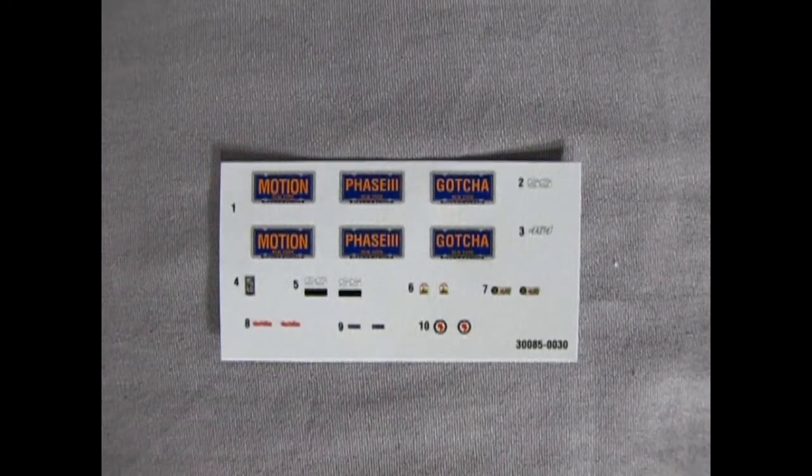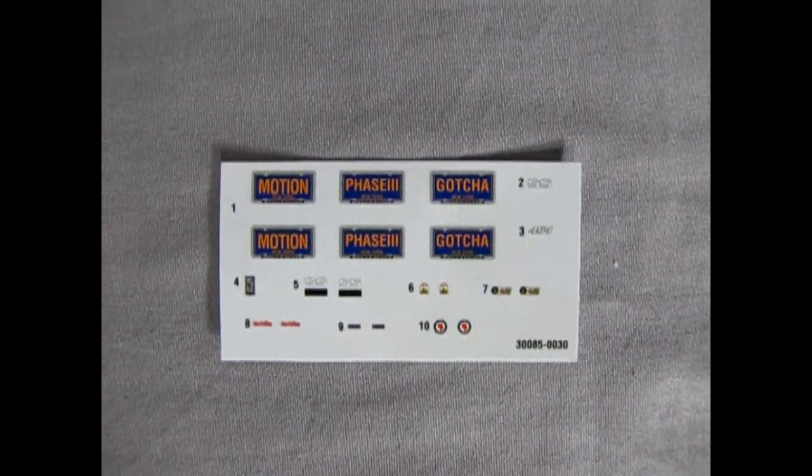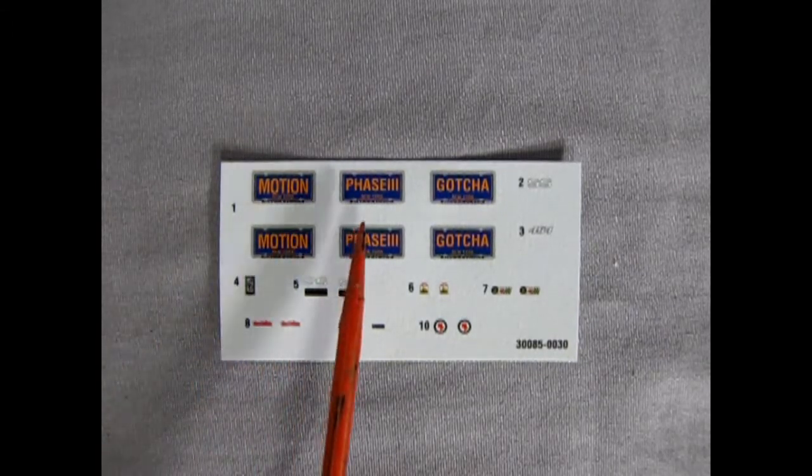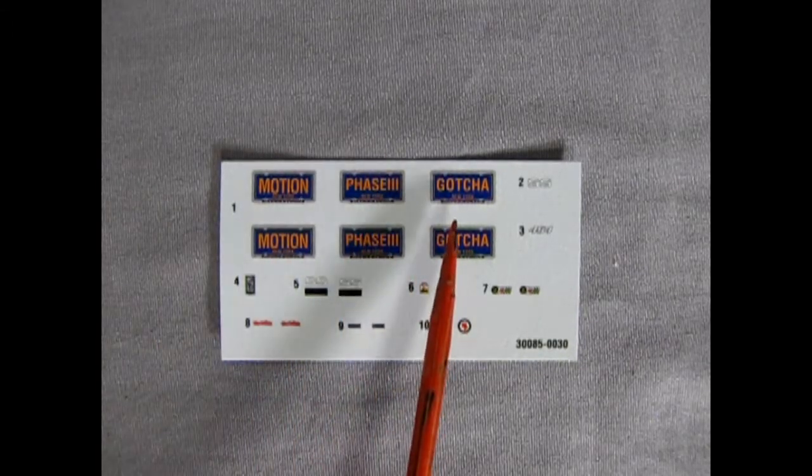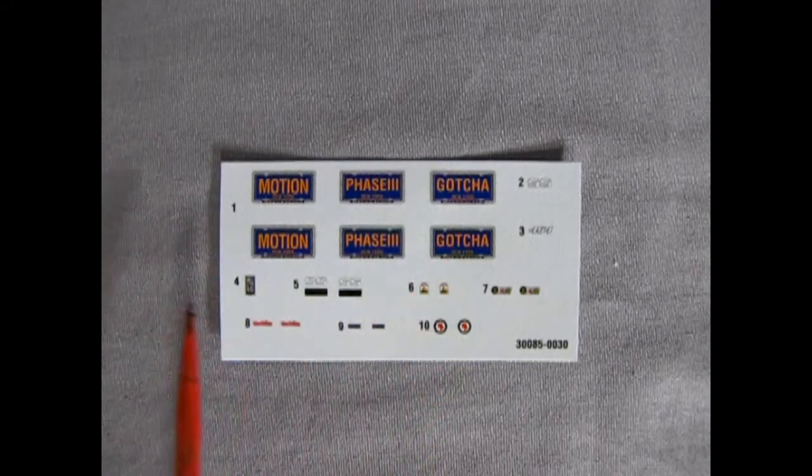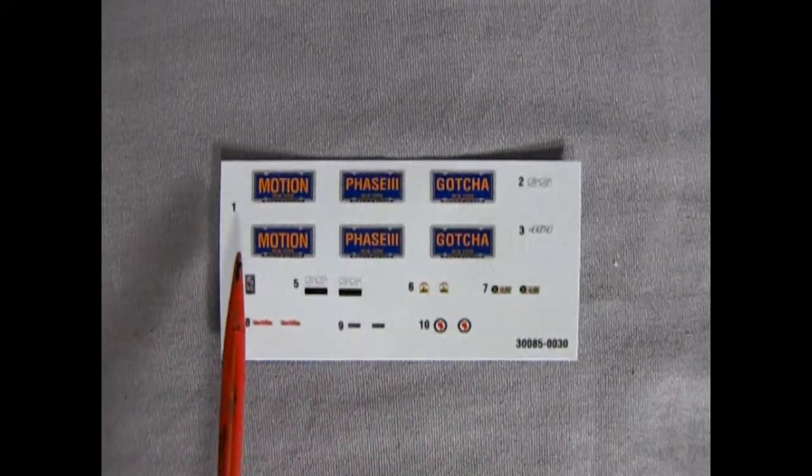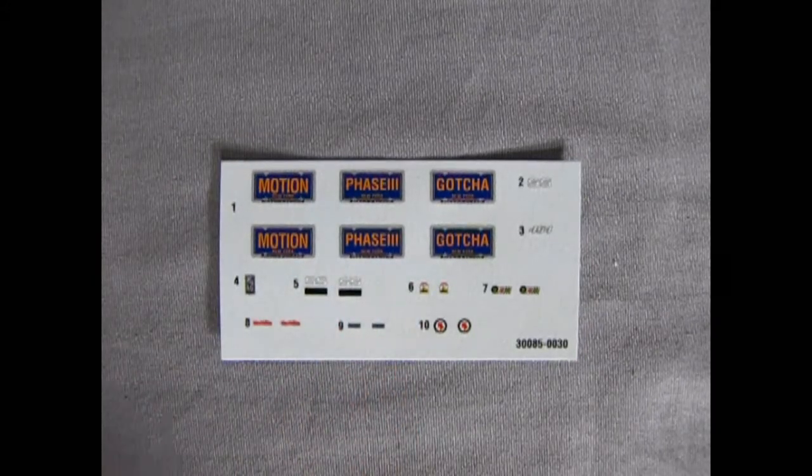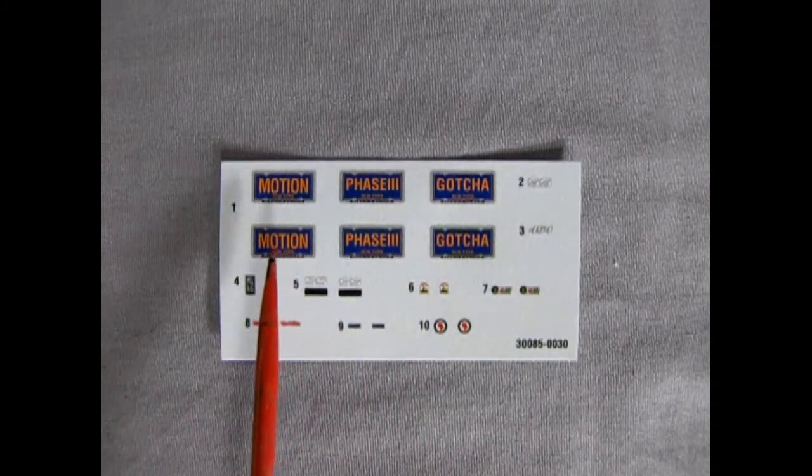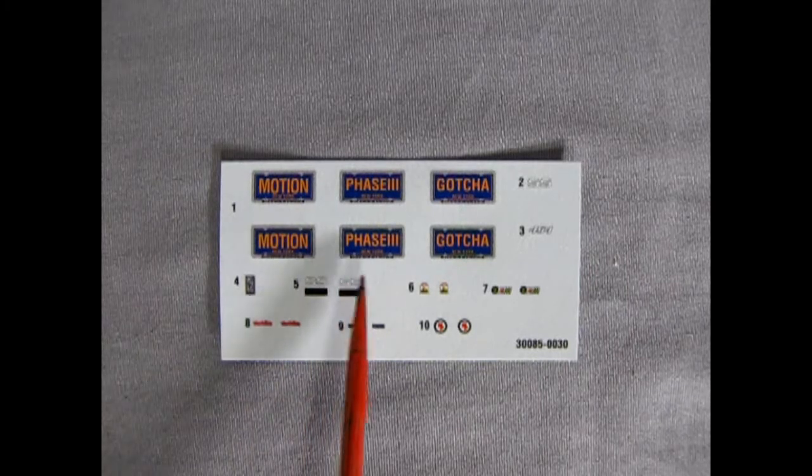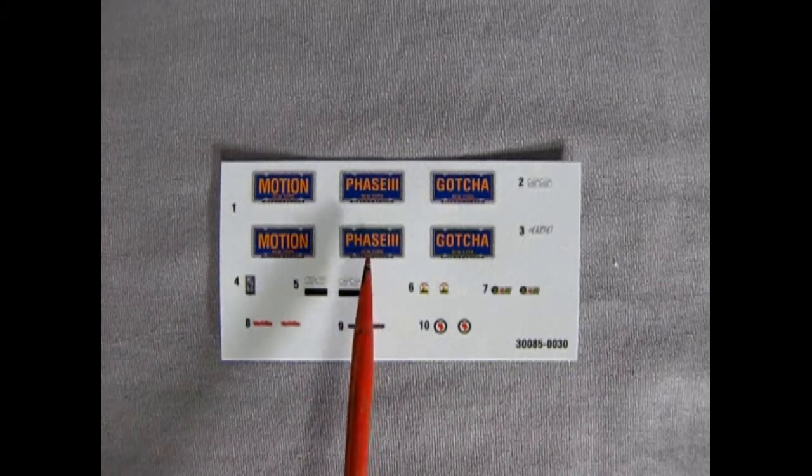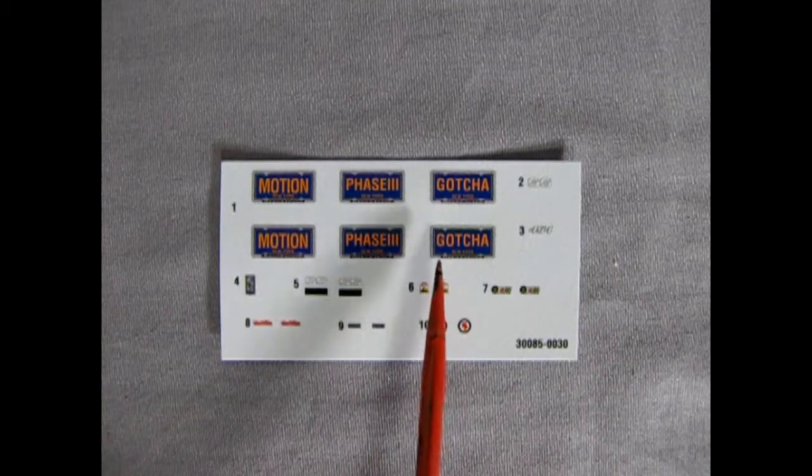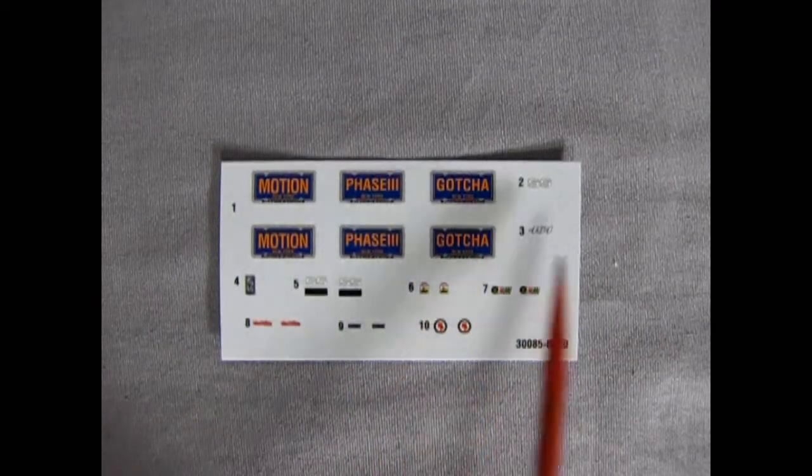That brings us to our decal sheet. And here we have three license plates from New York. One that says Motion. One that says Phase 3. And the final one says Gotcha. And these are personalized license plates with the frame around them. So you could actually use these on different cars as well. The Motion one you could use on other Baldwin Motion model kits of course. Phase 3 is sort of a universal thing. Could also be for the Baldwin Motion. But Gotcha definitely could fit on any car and look good anywhere.